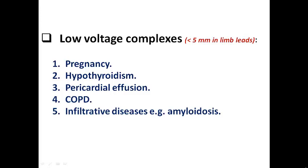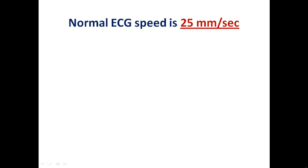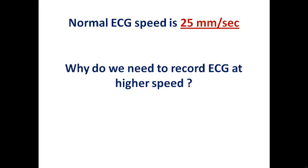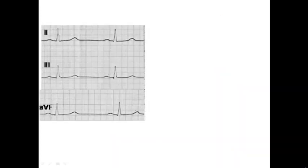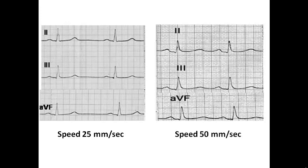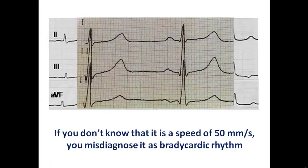The first thing to check in the ECG paper is the standardization. Now regarding the speed: the speed normally is 25 mm per second, meaning in each one second there is a deflection of 25 mm duration. Higher speed — for example 50 mm per second — will make waves wider and widely spaced, revealing subtle findings. If an ECG is performed at 50 mm per second instead of 25, the complexes appear wider and widely spaced, and you may misdiagnose the ECG as a bradycardic rhythm when it is not.